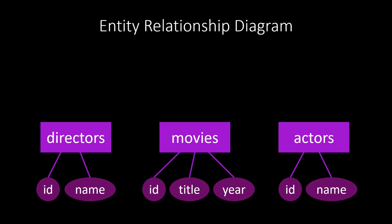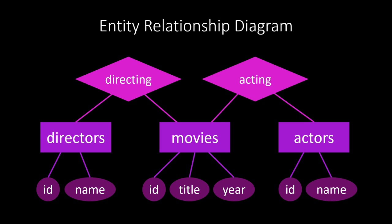Diamonds are used to show relationships between entities. We have a relationship between movies and directors, and a relationship between movies and actors. These relationships could also have other data attributes. An actor plays a character in a movie, and that character usually has a name.